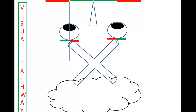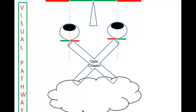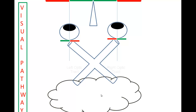From the retina there is the optic nerve, which goes into the optic chiasm where the two optic nerves converge. Posterior to the optic chiasm is the optic tract — the left optic tract and the right optic tract — which connect to the occipital cortex.